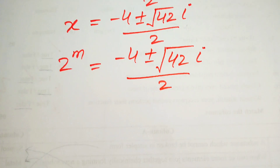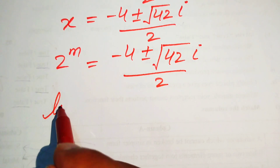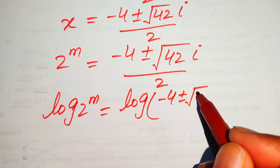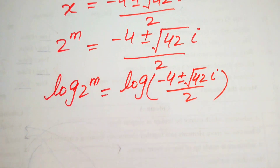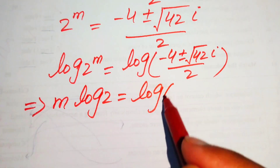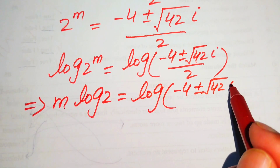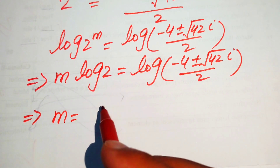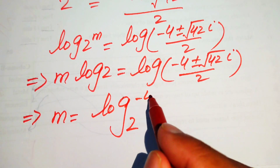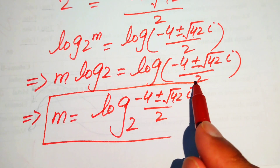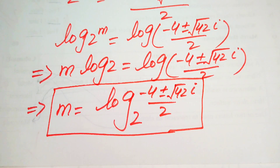Back-substituting, 2 to the power of m equals minus 4 plus or minus square root of 42 iota, divided by 2. Taking log on both sides and applying log properties, m times log 2 equals log of that expression, so m equals log base 2 of minus 4 plus or minus square root of 42 iota, divided by 2. These are the two complex roots of the equation. Thank you for watching — please subscribe for more videos.